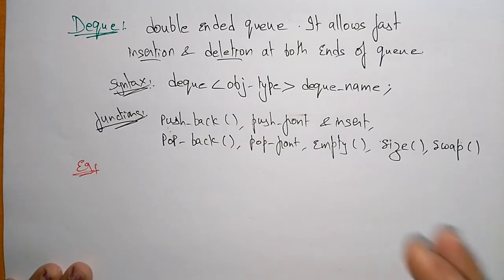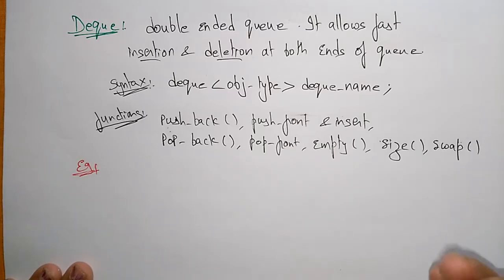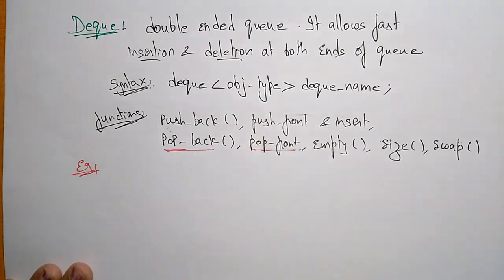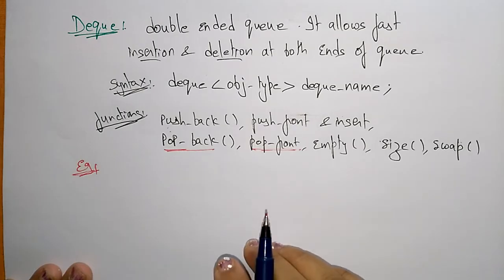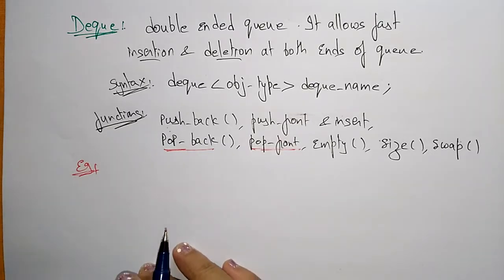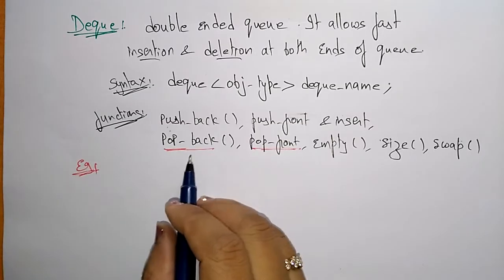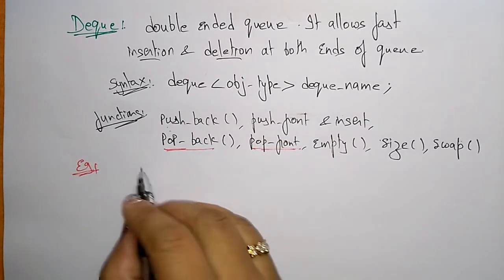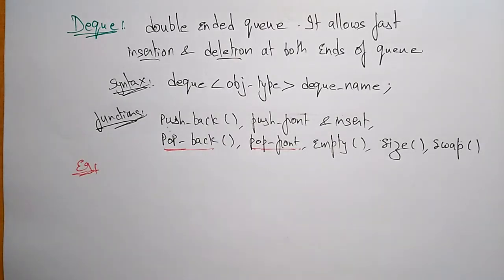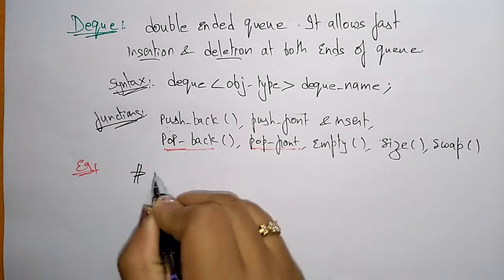pop_back removes an element from the back of the deque, whereas pop_front removes an element from the front of the deque. Both operations decrease the size of the deque by one. In the previous vector example I used push; now for the deque I'll demonstrate pop — you can pop at the back or at the front, and the size will decrease accordingly.